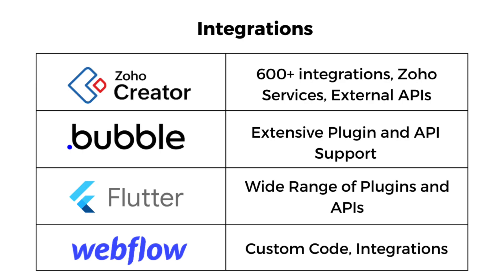And the last feature is integration. Zoho Creator offers more than 600 integrations with Zoho services and external APIs. Bubble offers extensive plugin and API support. Flutter has a wide range of plugins and APIs. And Webflow offers custom code and integrations. Now let's compare the pricing of all of the different platforms.